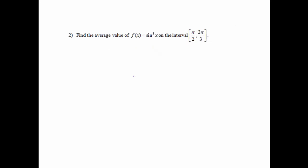Okay, number 2, find the average value of sine cubed x on the interval pi over 2 to 2 pi over 3. Keywords here are average value, so I know I need to do 1 over b minus a times the integral from a to b. So here we go. So I'm going to do 1 over 2 pi over 3 minus pi over 2, and then times the integral from pi over 2 to 2 pi over 3 of my function, and my function happens to be sine cubed x dx.